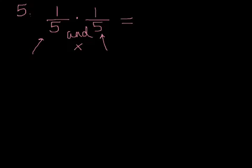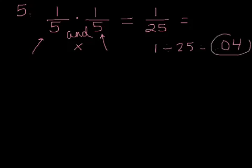Multiply those two fractions. One times one is one. Five times five is twenty-five. Make sure you multiply straight across. You're going to do that in your calculator. One divided by twenty-five. You're going to get 0.04. And that's your final answer.